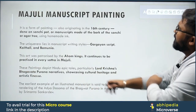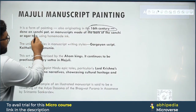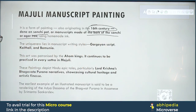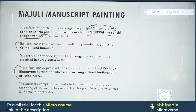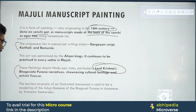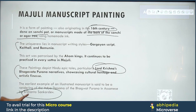The Majuli Manuscript Painting is a form of painting originating from the 16th century, done on Sanchi Pat — manuscripts made from the bark of the Sanchi and Agar tree. These paintings depict tales, particularly of Lord Krishna, because this tradition is rooted in Neo-Vaishnavism. This particular tradition is associated with Srimanth Sankar Dev.